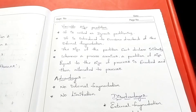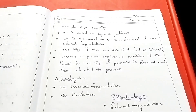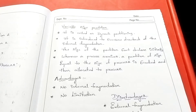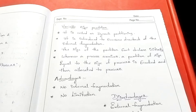Next is the variable size partition. In variable size partitioning, memory is not divided into fixed blocks beforehand. When a process is requested, for example P1 needing 3MB or P2 needing 5MB, the partition is created dynamically to match the process size.